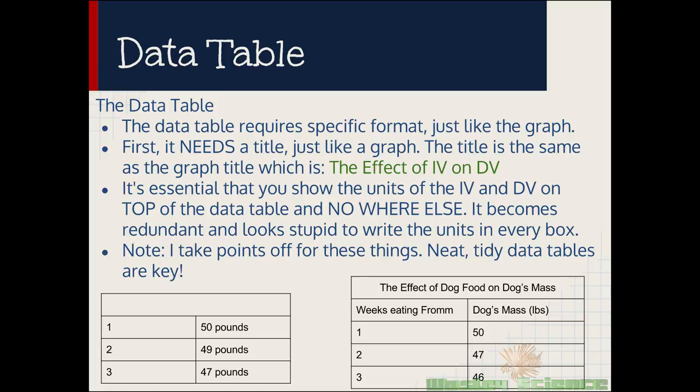The format that I prefer for you to have for your data table and your graph is just the effect of the IV on DV. And it's essential for you to show the units of the IV and DV on the top of the data table below the title and nowhere else. You don't want to plug it into every single cell, every single trial. It'll just become redundant and just look silly. So you really want to make sure that your units are on top. And I take points off for these things. I really like to see a neat and tidy data table.